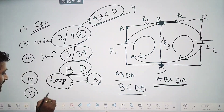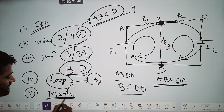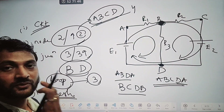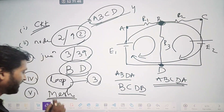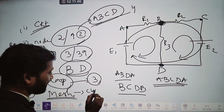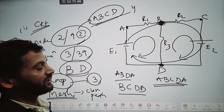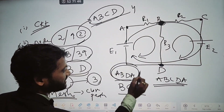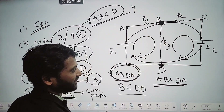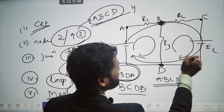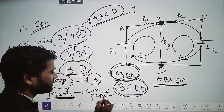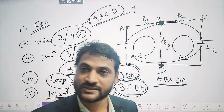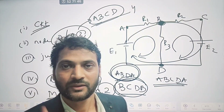But what is mesh? A mesh is a closed path that cannot be further divided — it is the shortest form of a loop. Here, A-B-D-A is a mesh because it cannot be further divided. Similarly, B-C-D-B is a mesh. So there are two meshes. Loop is a closed path; mesh is a closed path which cannot be further divided.